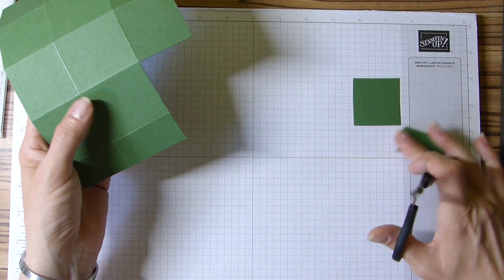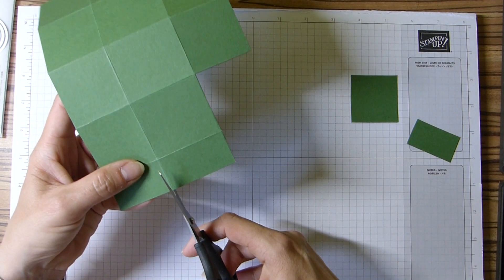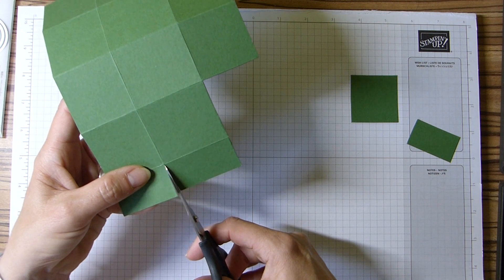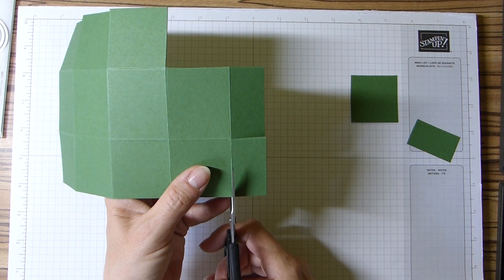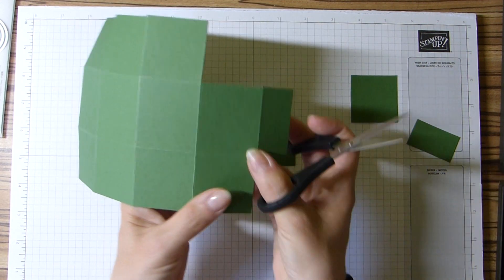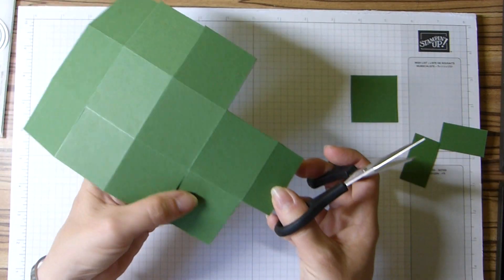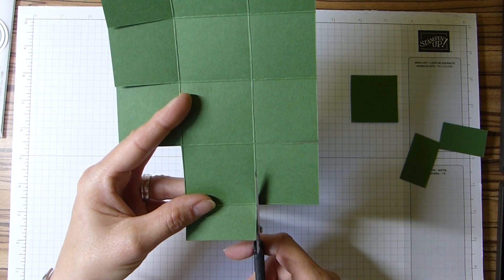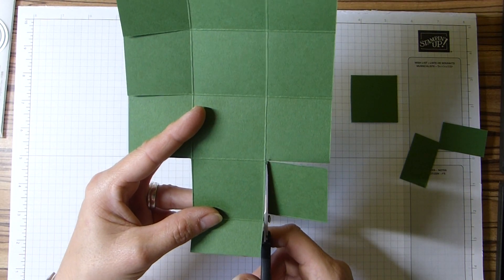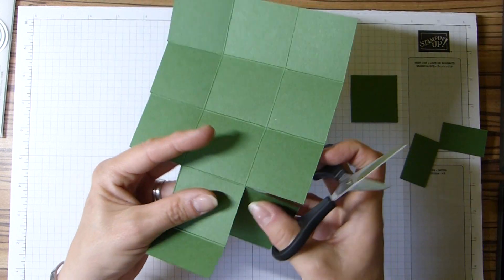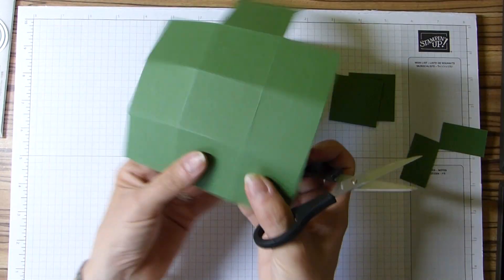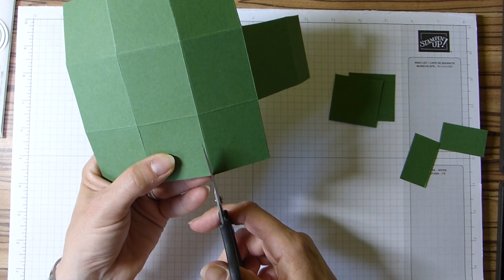But hang on to that because you will need it. I'm going to do exactly the same on the opposite side. Cut down all of the points all the way to that score line, and cut away this one at the top.